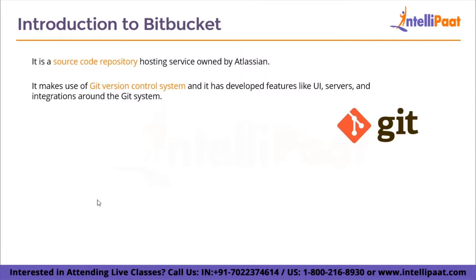Git is the most popular open-source version control system right now, and every developer knows what Git is. Version control means it can track changes to your files. If you are maintaining a project with a large number of files, it becomes harder to manage, and this is where version control comes in. Bitbucket has taken advantage of the open-source nature of Git and extended its functionality to provide users with a better project management experience.